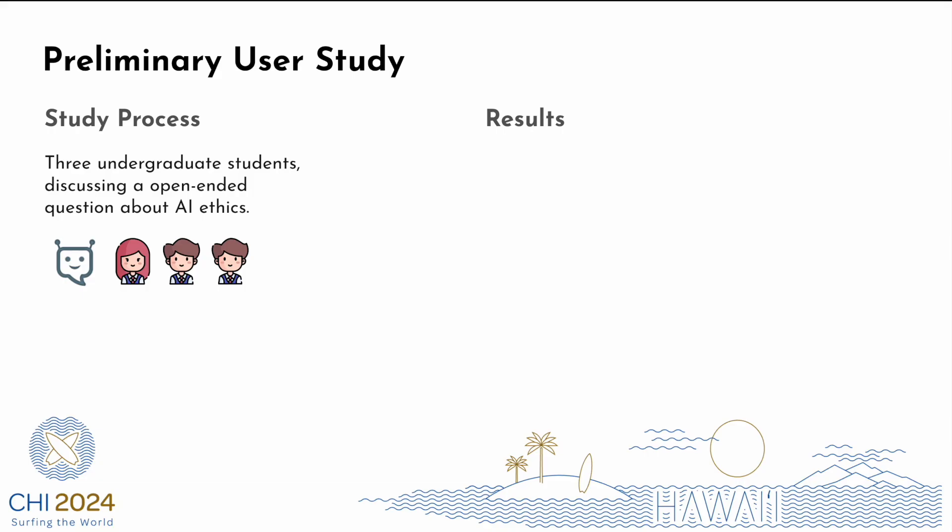In a preliminary user study, three undergraduate students engaged in a 20-minute discussion. The bot displayed desired behaviors — state transition, inclusivity, and knowledge construction — but had stability issues, and students' opinions varied on its timing.